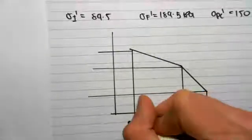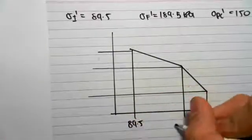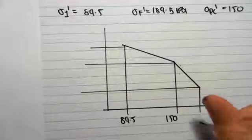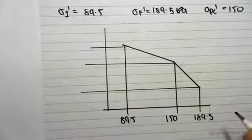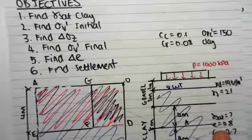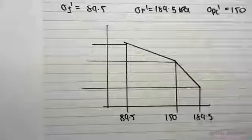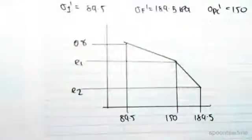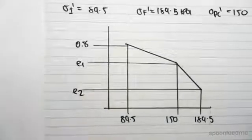So this would be the initial, which is 89.5. This would be the pre-consolidated, which is 150. And we know that our initial void ratio is 0.8. That's given to us in the question, so this is 0.8. Our aim is to find e2, which is the final void ratio, and then we can use that to find the change in void ratio.